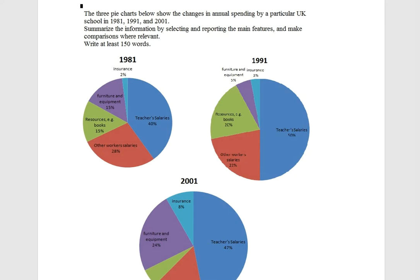This is a common scene in IELTS Task 1. You have to report and describe the main features of three pie charts. The three pie charts below show the changes in annual spending by a particular UK school in 1981, 1991 and 2001. This part of the instruction is always the same — you have to select, report and make comparisons between the features of the pie charts. Or sometimes it's a table, a line graph, or a diagram. In this case, it's three pie charts.